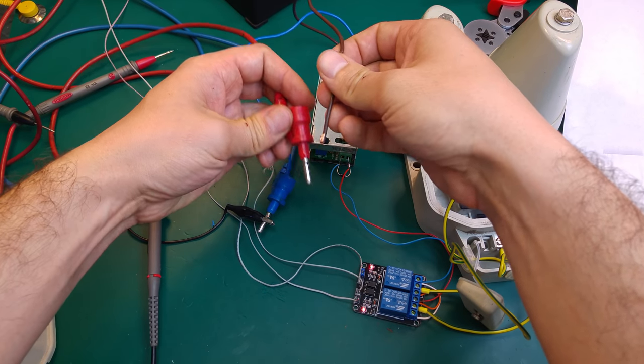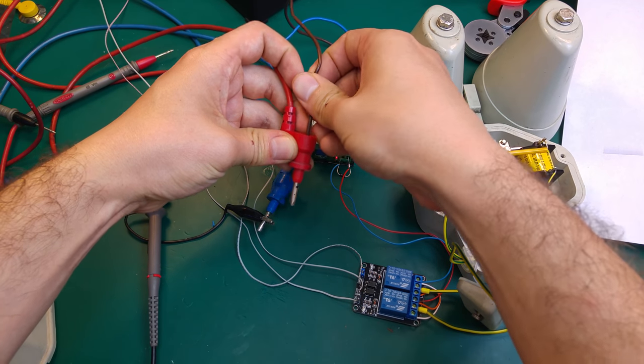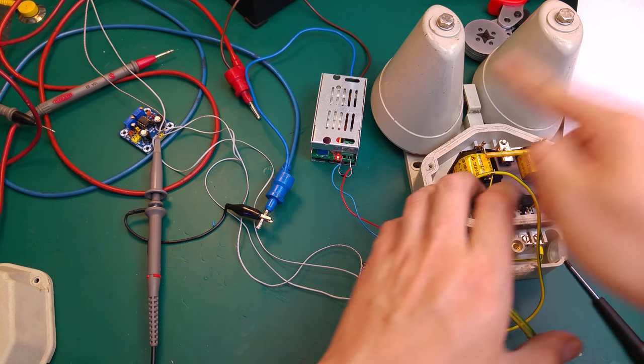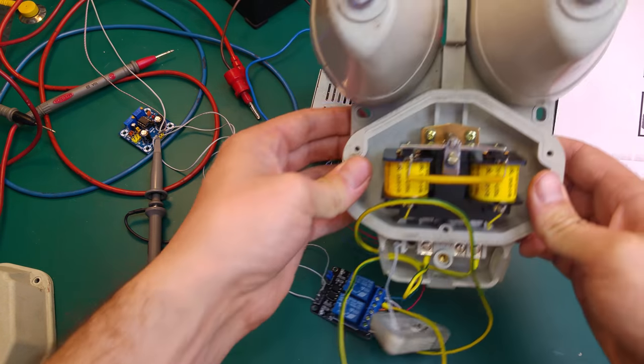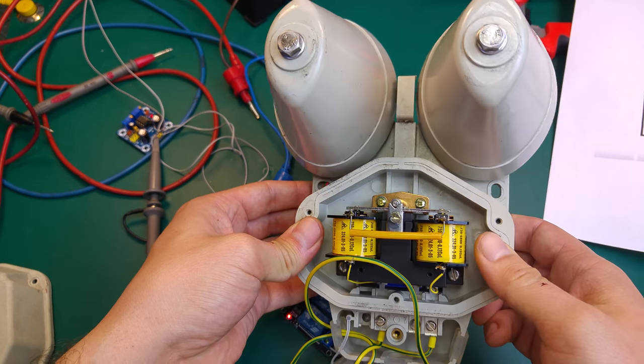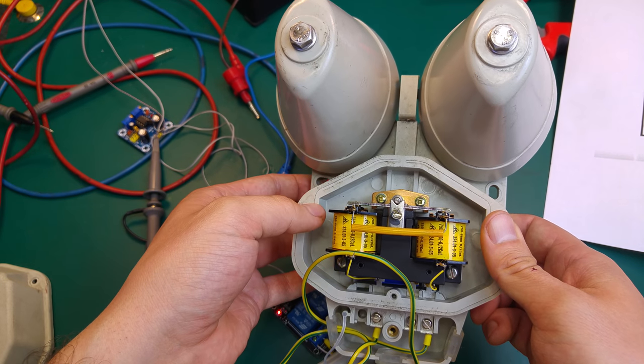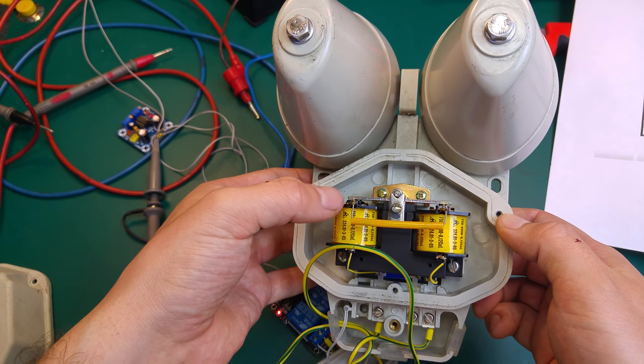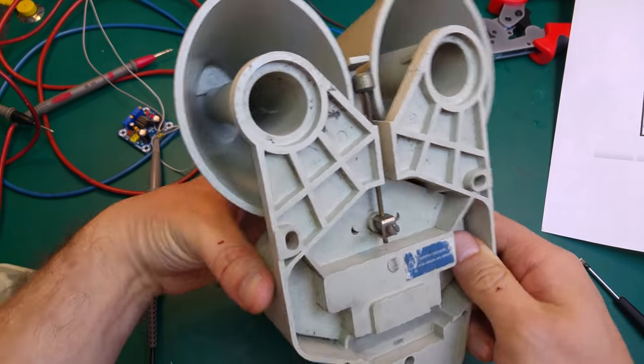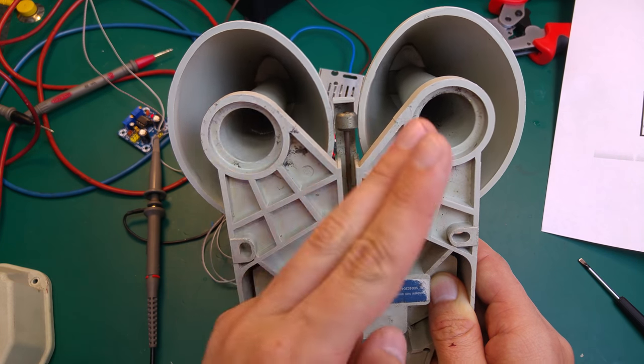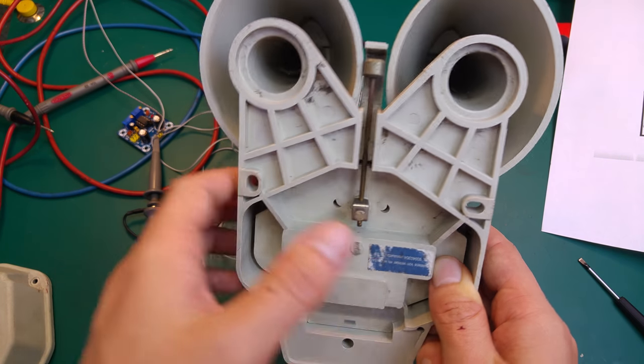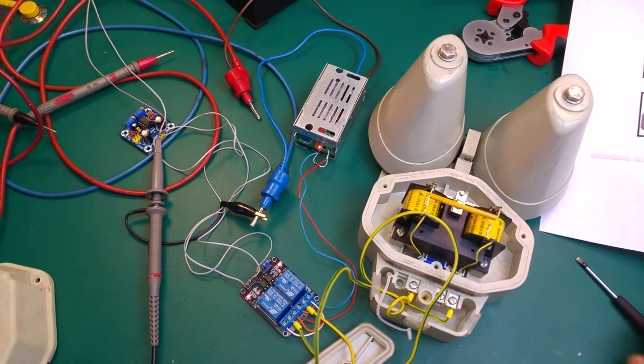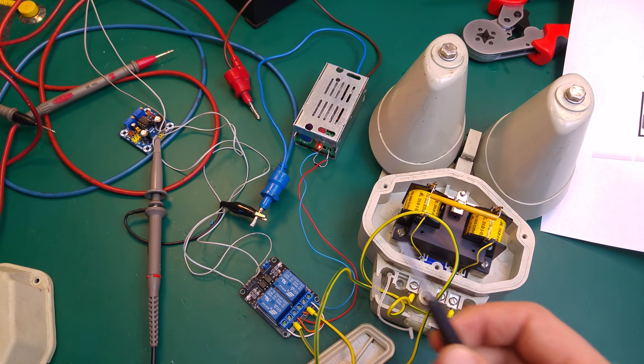As you can see, we've got the two tones from the separate channels. You can see the coil going up and down and the element driving. You can see it's going in the reverse polarity. Let's do a little adjustment and make it go faster.